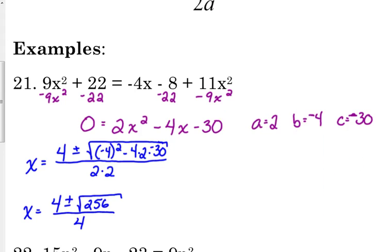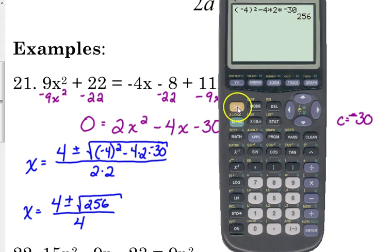Now I know it's very tempting, you want to cancel out those 4s. But you can't, because it's 4 plus or minus something divided by 4. So you can't do anything yet there. But what we can do is check and see, can we take the square root of 256? And we can. It's 16.